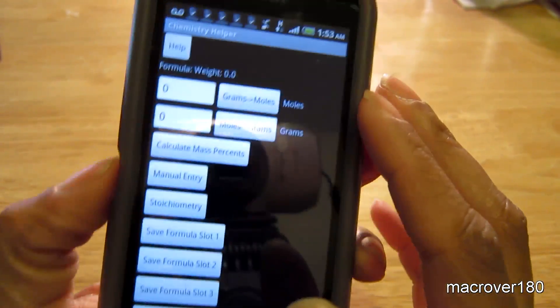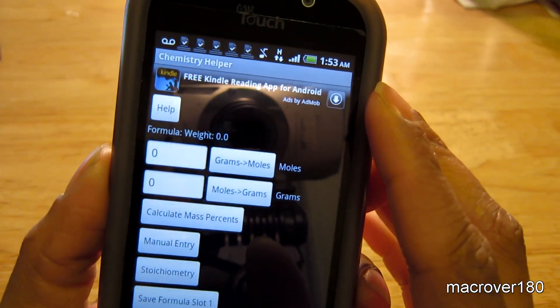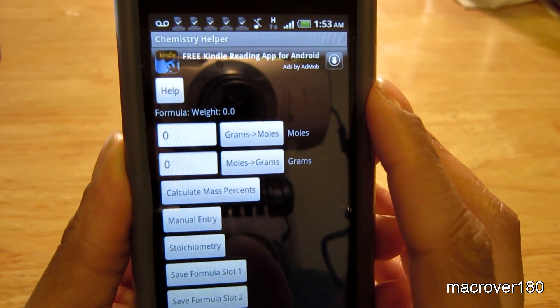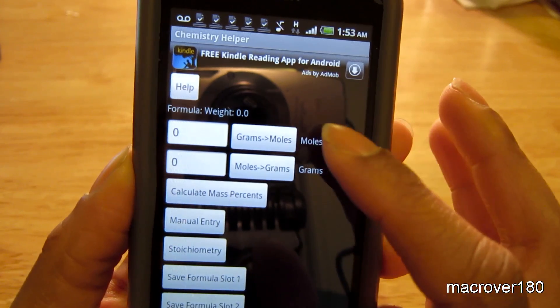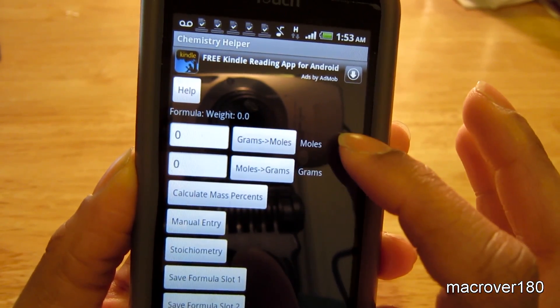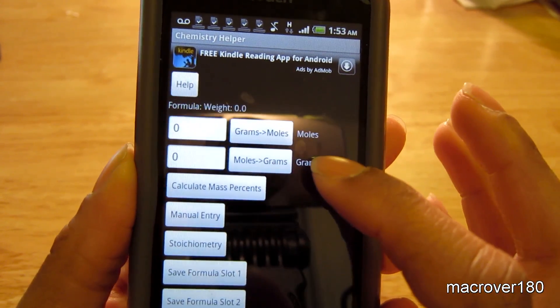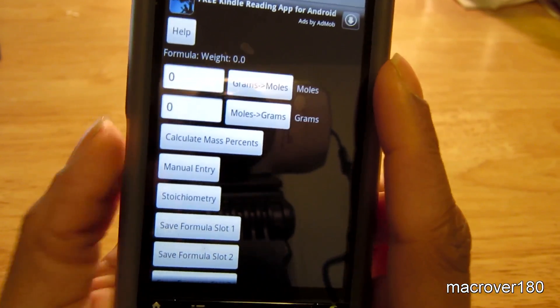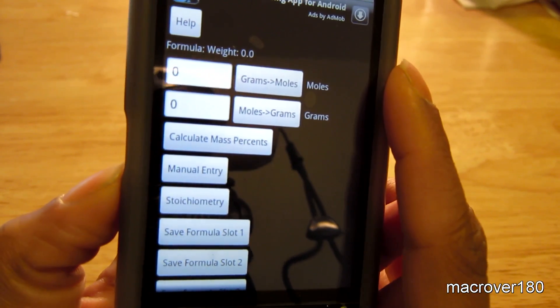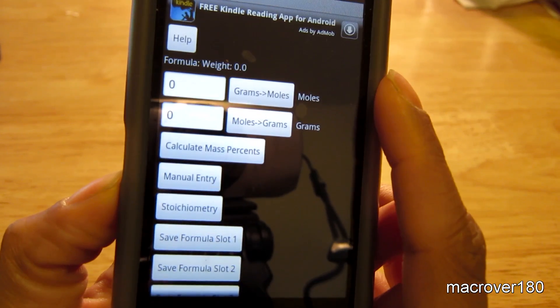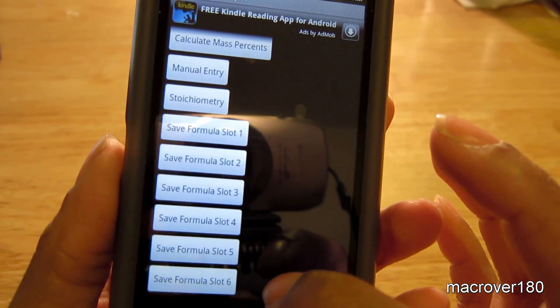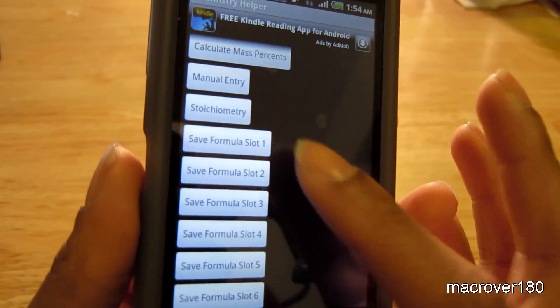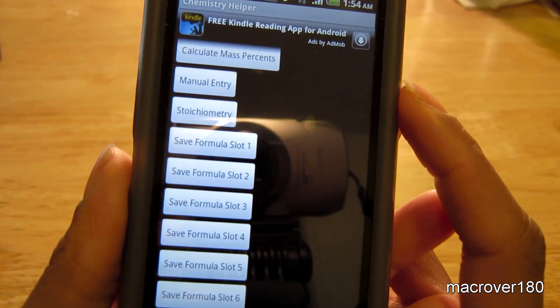Tools allows you, pressing tools allows you to further customize whether you want to go from grams to moles or moles to grams. You can calculate mass percents. There's a manual entry. You have six formula slots that you can save your formula in.